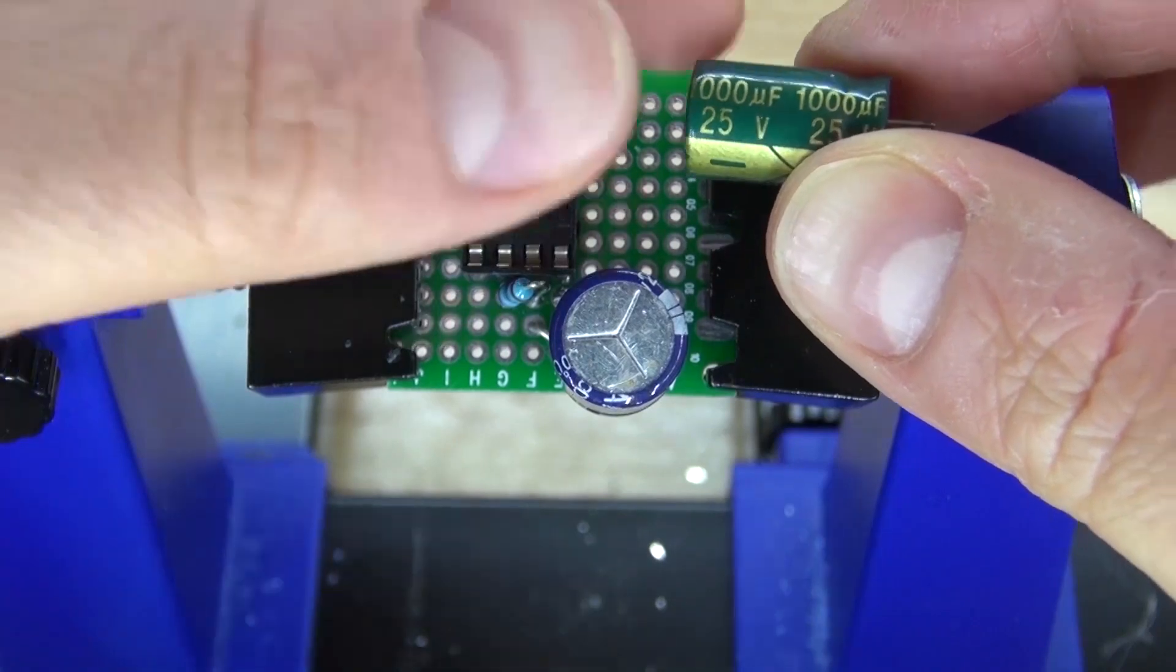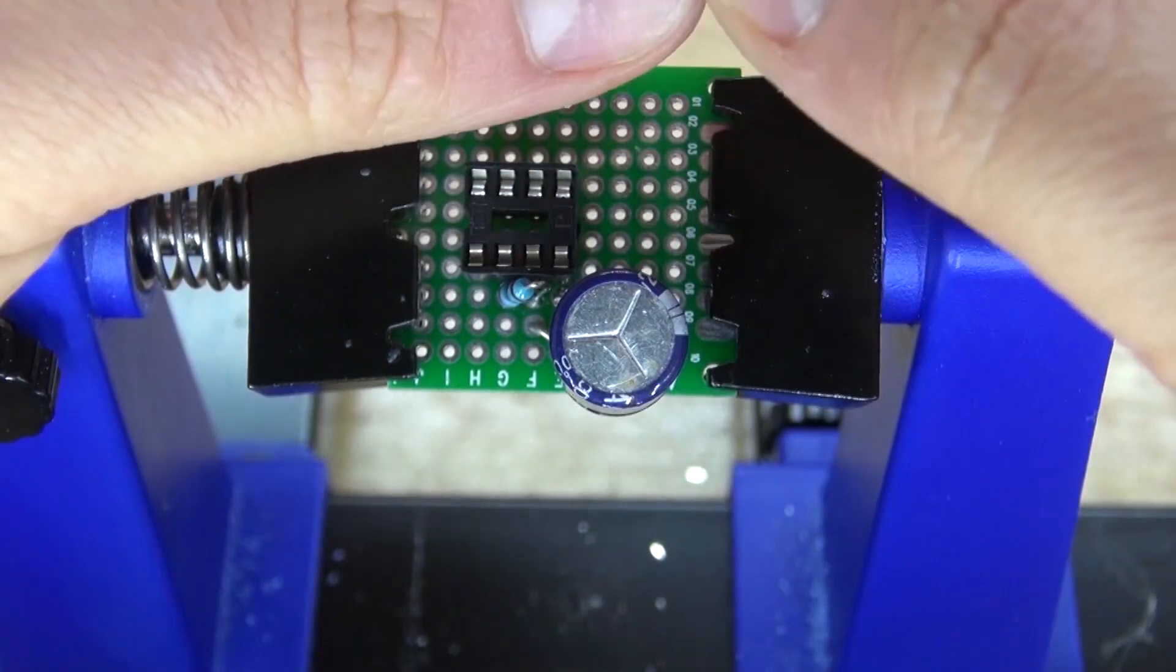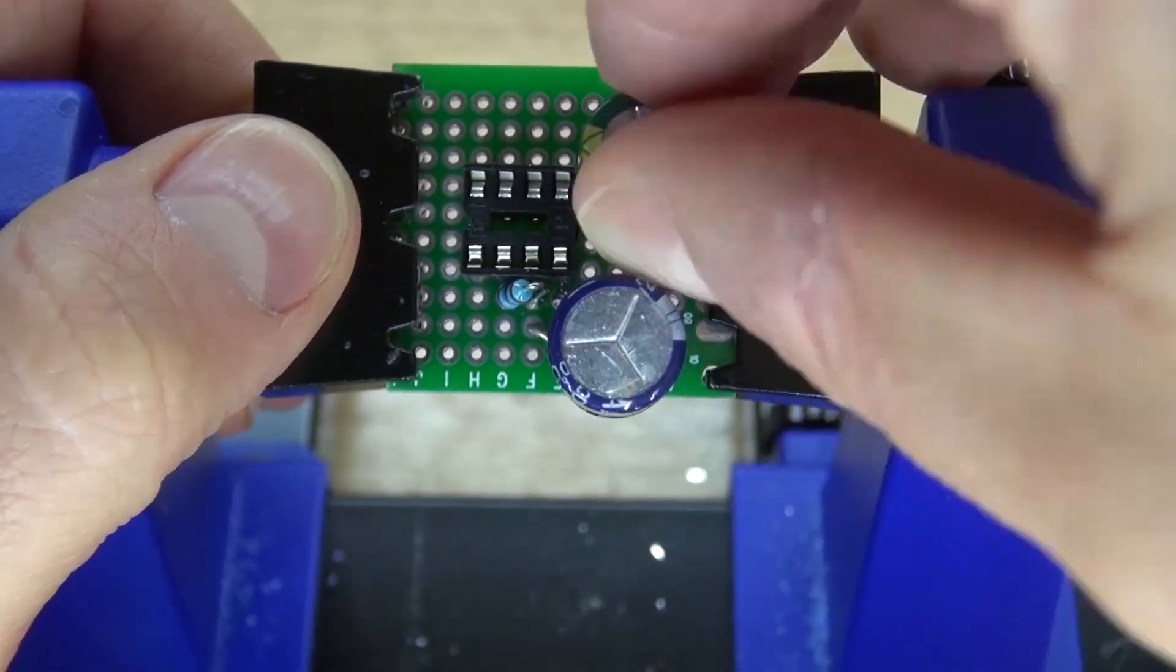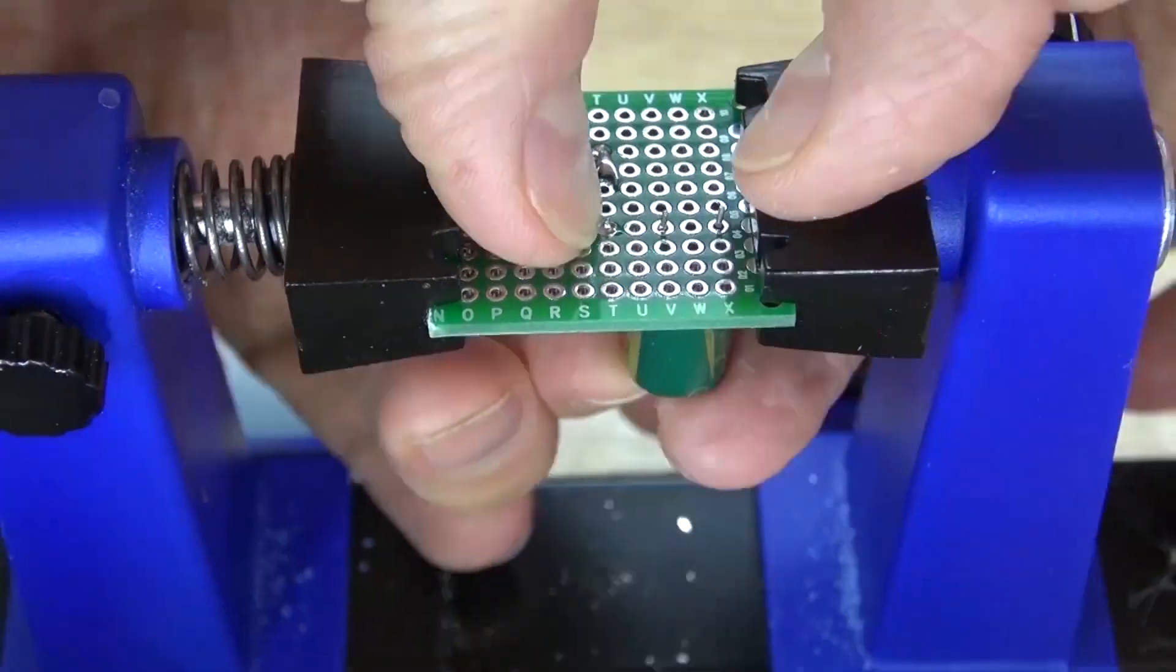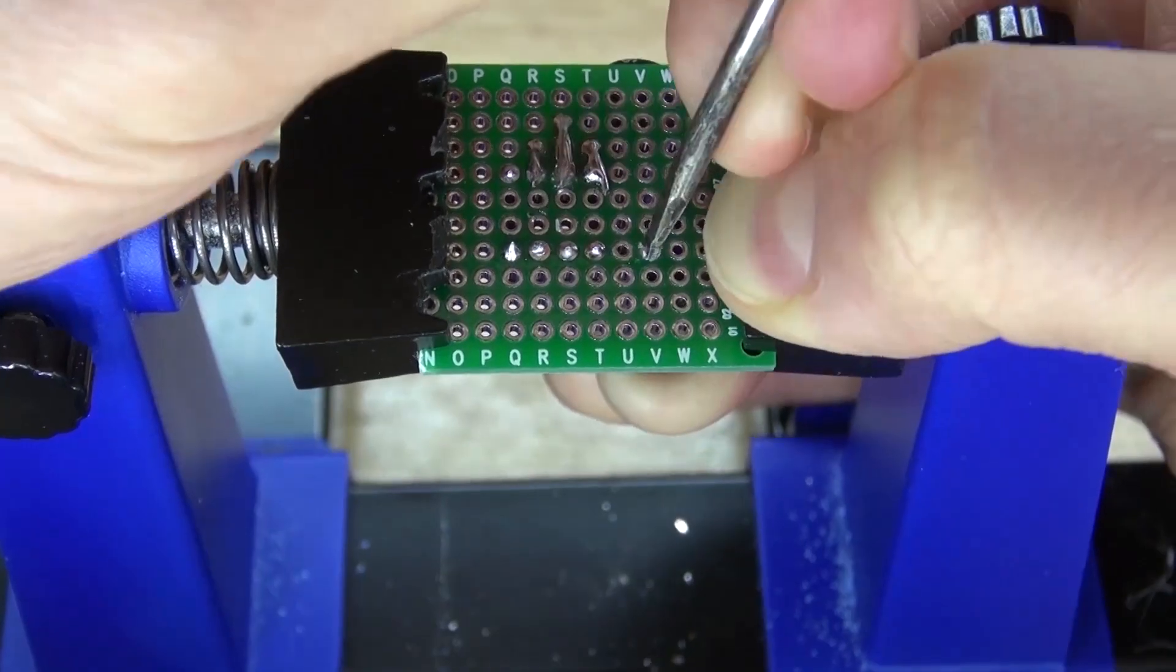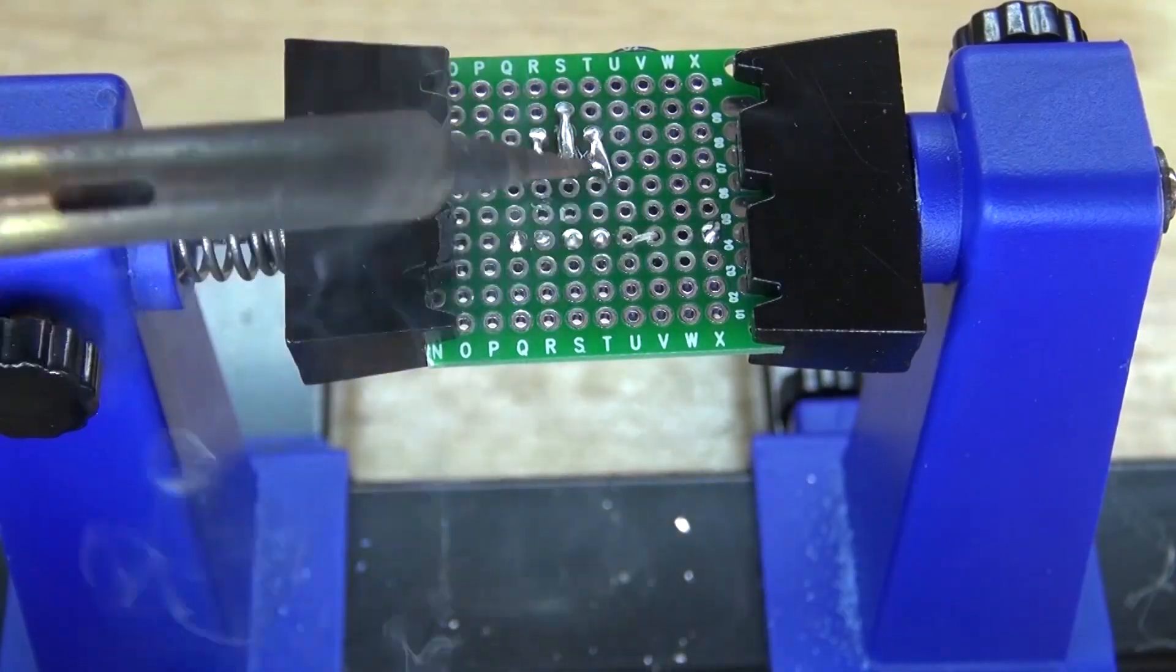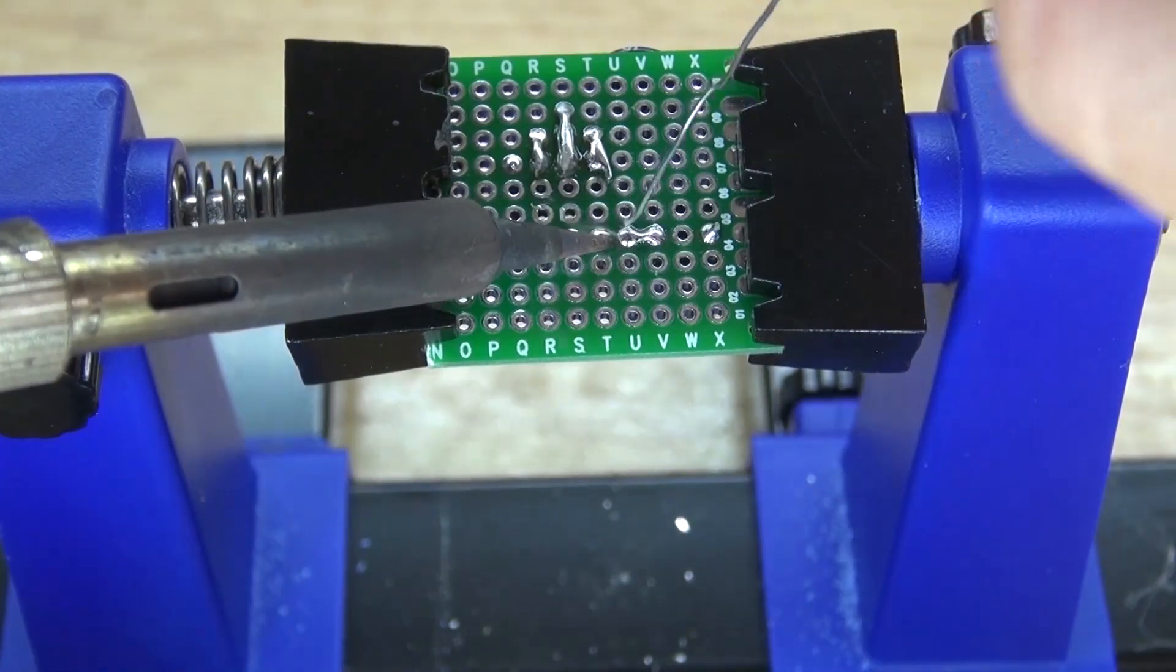Next take your 1000 microfarad electrolytic capacitor and connect the negative to pin 5. Bend the leads over, solder it into place, and then solder bridge it together.